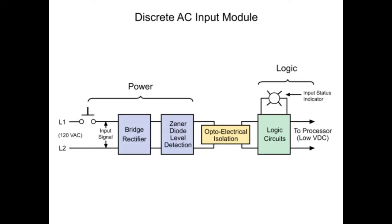Starting with the AC discrete input module, the circuit is comprised of two sections. The first section is referred to as the power section, and the second is called the logic section.